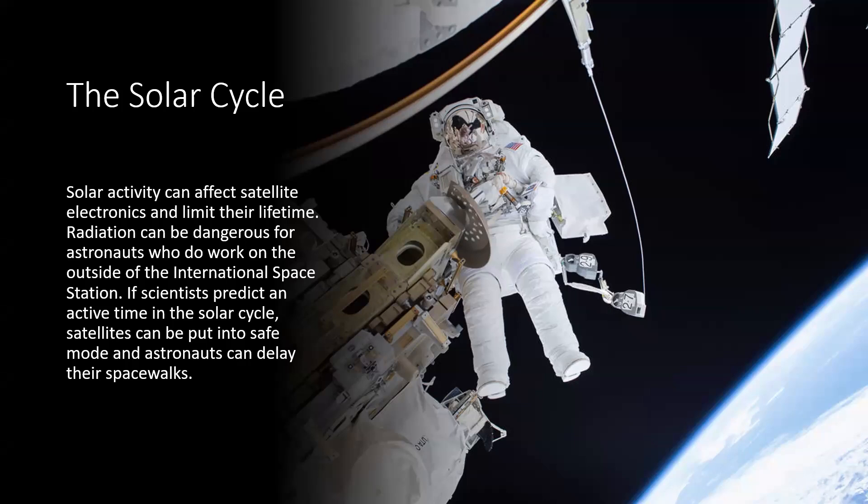Solar activity can affect satellite electronics and limit their lifetime. Radiation can be dangerous for astronauts who do work on the outside of the International Space Station. If scientists predict an active time in the solar cycle, satellites can be put into a safe mode and astronauts can delay their spacewalks. This is where knowing space weather is like us knowing what the local weather is like. So we know whether we take an umbrella or we wear an extra layer of clothes because it is cold or freezing. It's the same kind of activity. We know the solar weather, therefore, we know what precautions to take to safeguard our communications and the people in space.